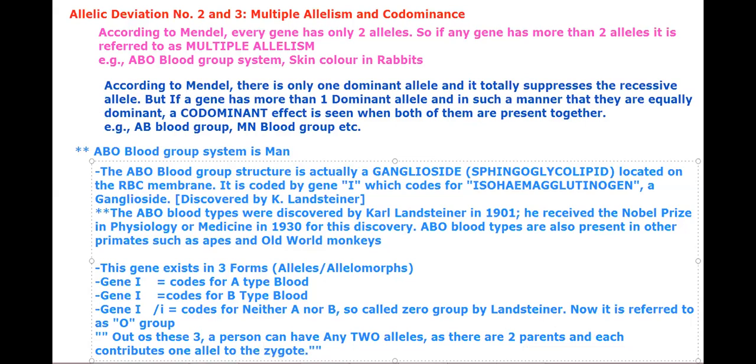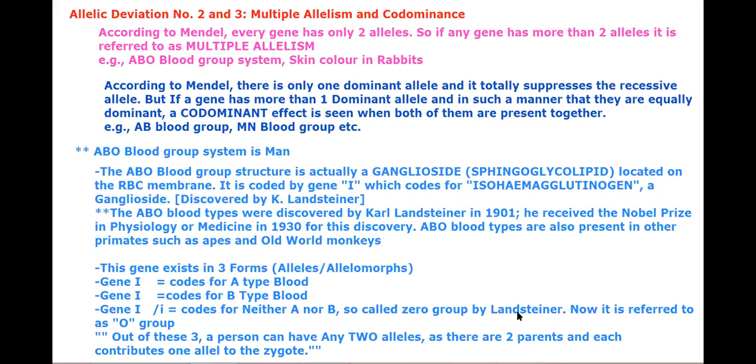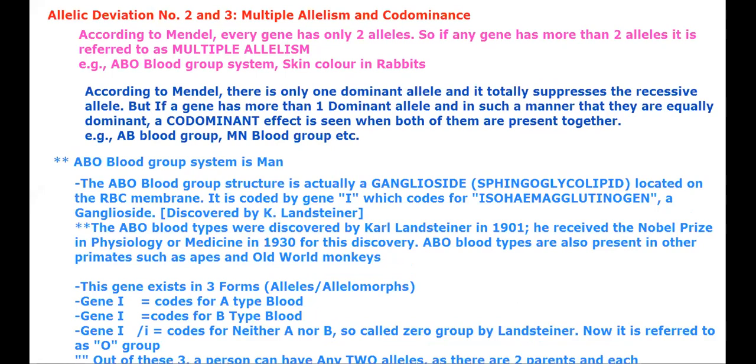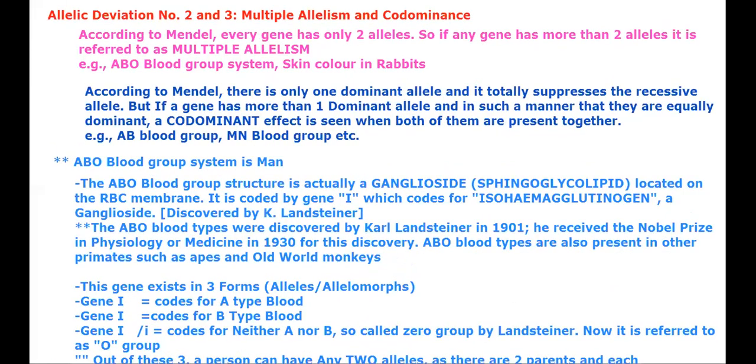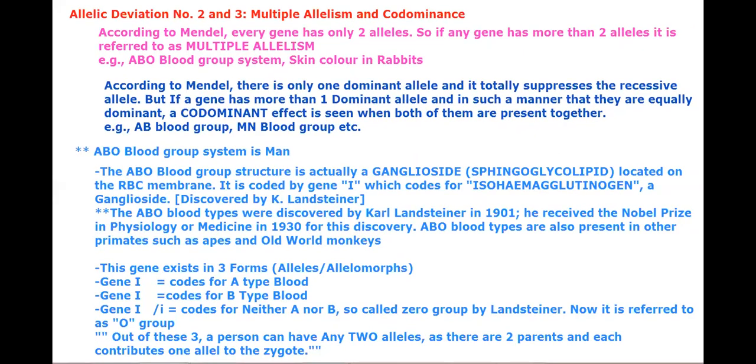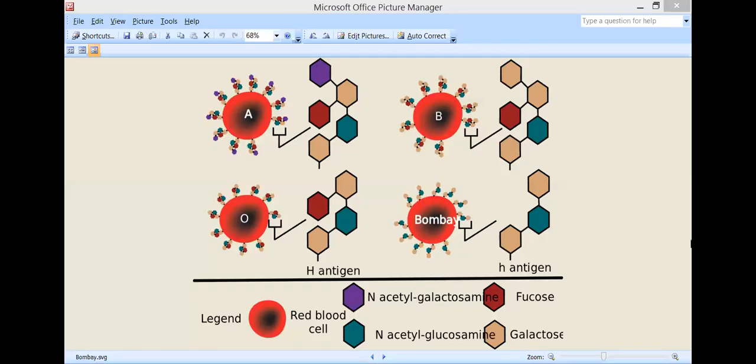The ABO blood types were discovered by Landsteiner in 1901. He received the Nobel Prize in Physiology and Medicine in 1930 for this discovery. ABO blood types are also present in other primates such as apes and old world monkeys. We will discuss this concept later. I have taken this photograph and will take a snapshot for you.